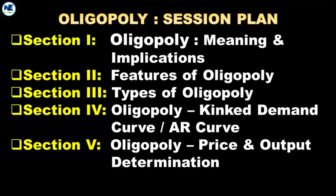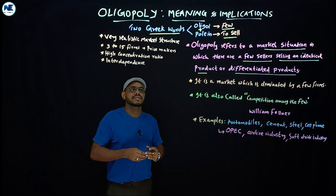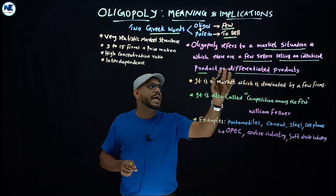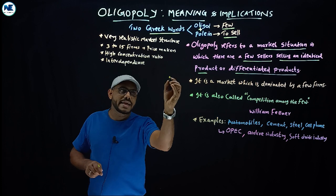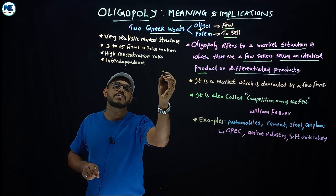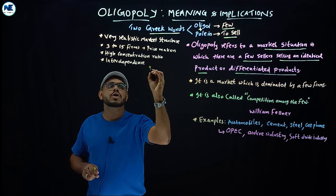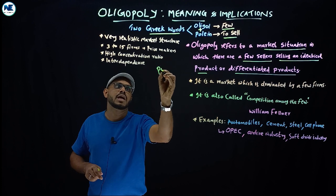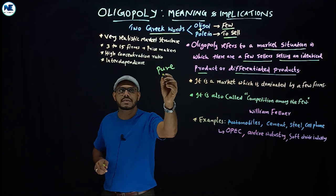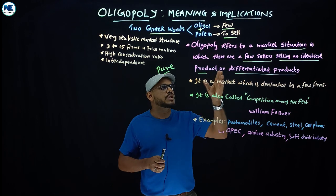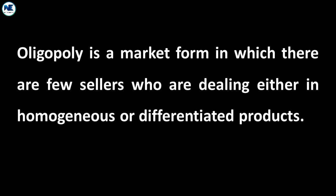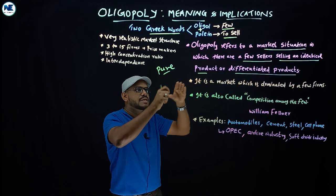Oligopoly refers to a market situation in which there are a few sellers selling an identical product—in a pure oligopoly market we will discuss in the coming video—or a few sellers selling differentiated products. That oligopoly market is known as differentiated oligopoly. This is the simple definition.